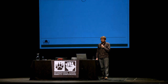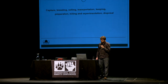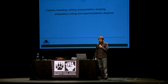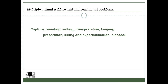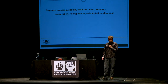There are many different animal welfare, animal rights, and environmental problems of harmful animal use, ranging from the capture — which might involve endangered or wild animals — the breeding, selling, transportation, keeping of the animal, the preparation, killing, experimentation, and disposal. All of these have a negative impact in terms of the animals, but also environmentally.